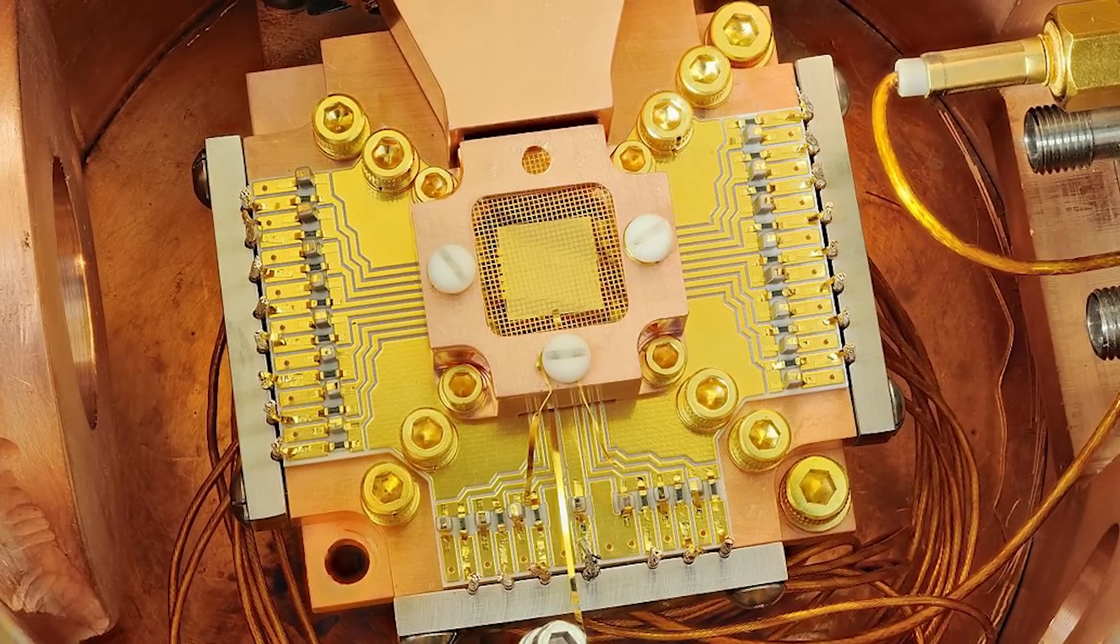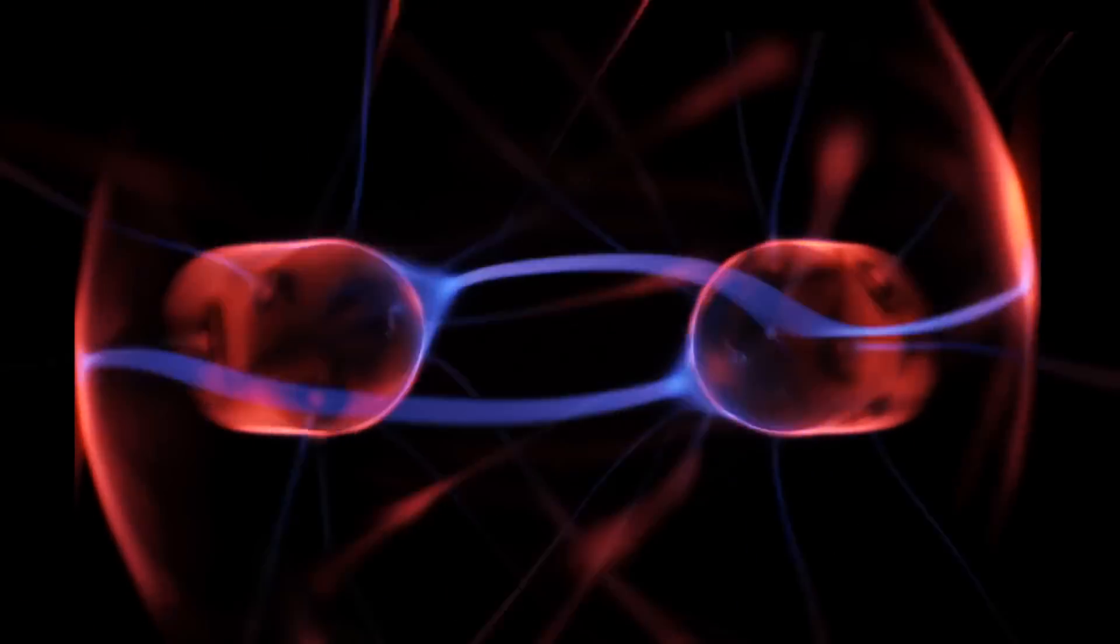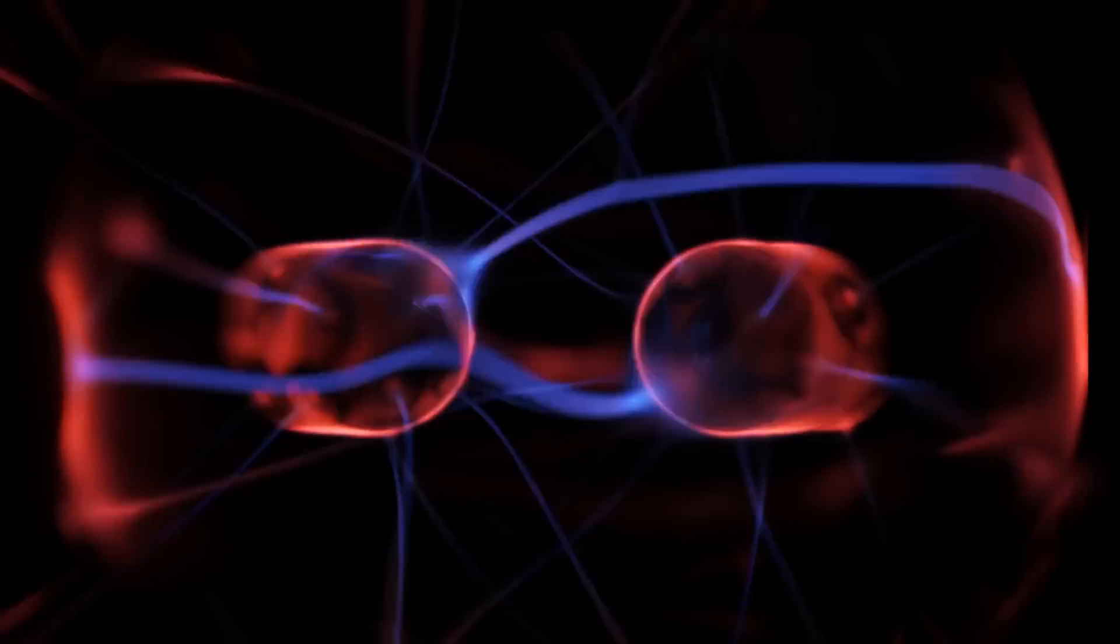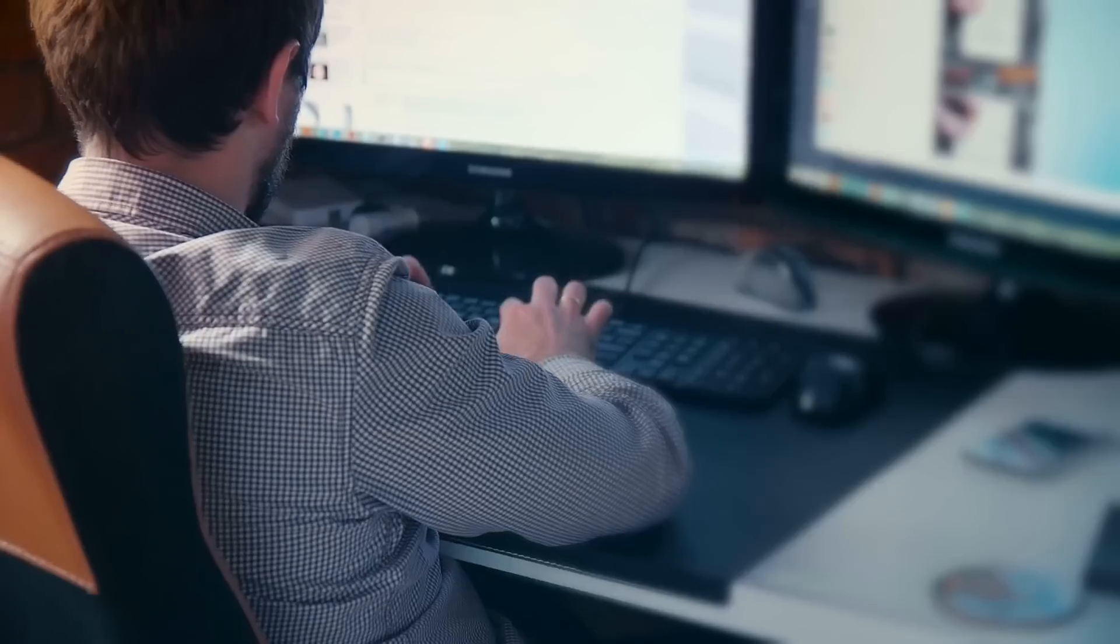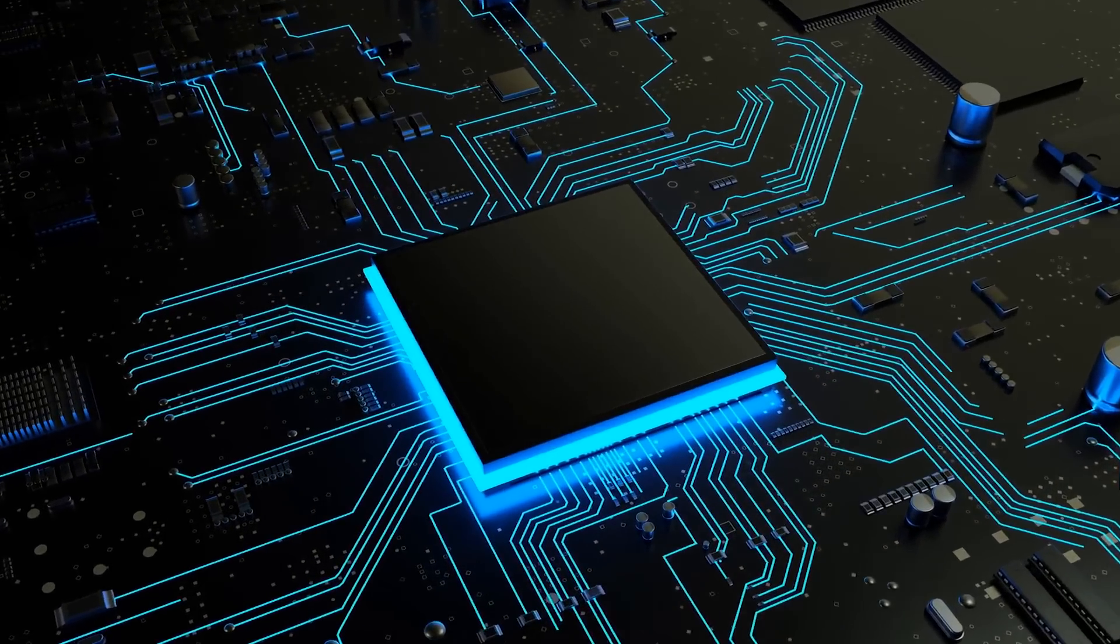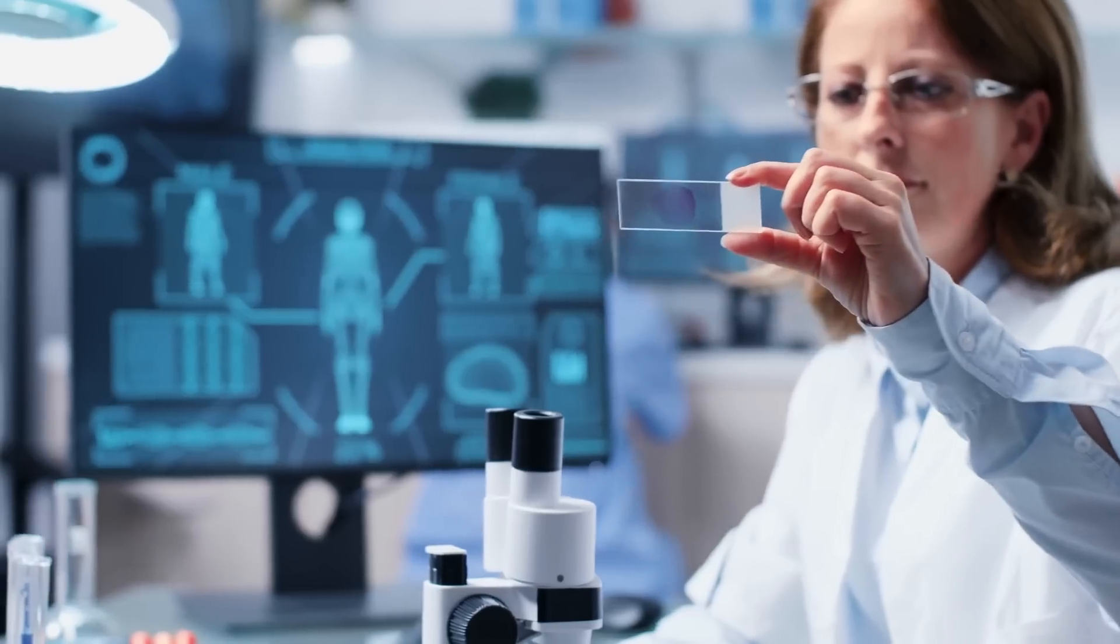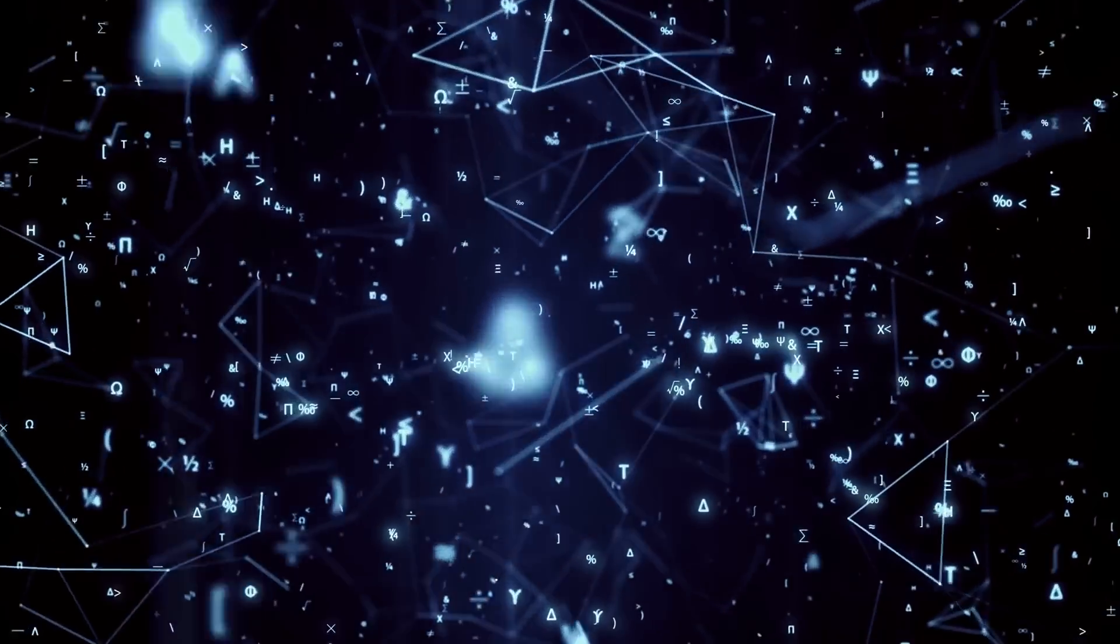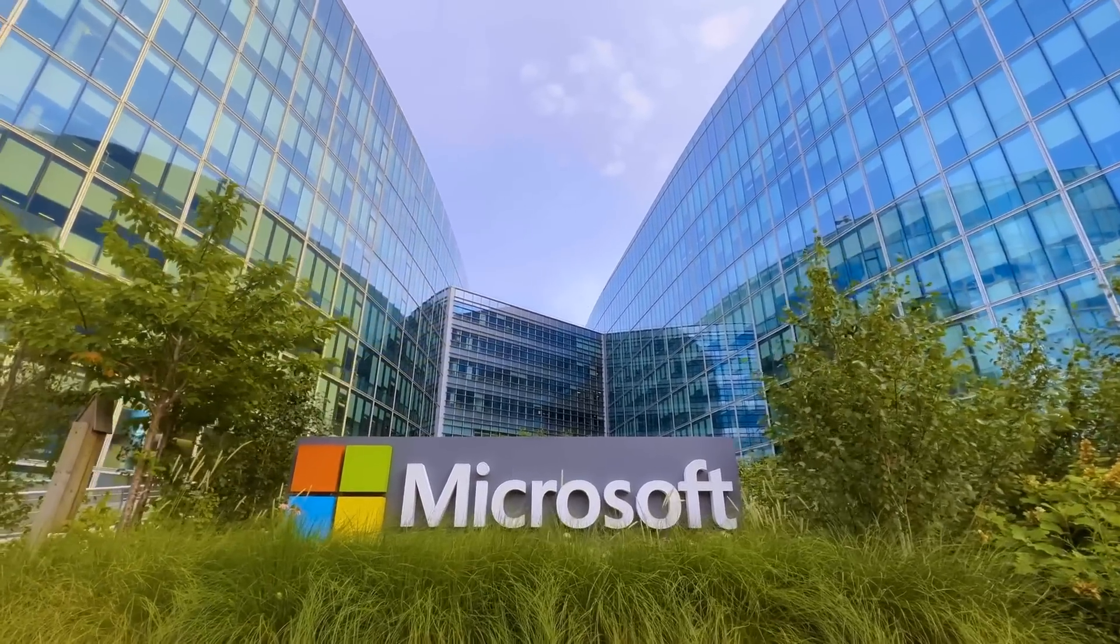They used Microsoft's qubit virtualization system with Quantinuum's advanced H-series ion trap qubits. The ion trap technology is one of the ways to build qubits, using ions, known as charged atoms, that are held in place by electric fields. By combining these two technologies, they were able to create logical qubits that are much more reliable than before. This achievement is significant because reliable logical qubits are essential for quantum computers to solve important real-world problems.